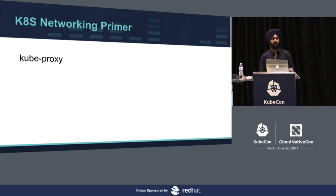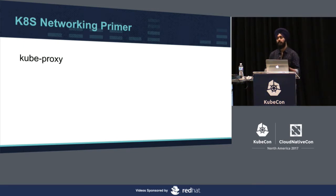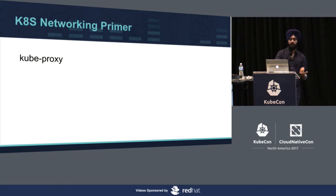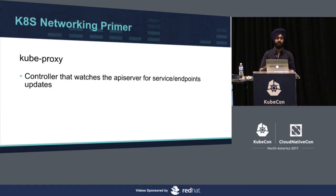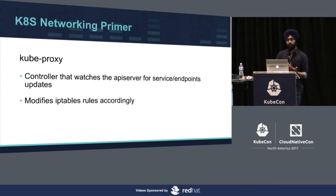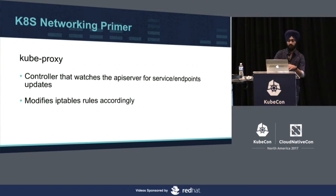The name kube-proxy is a bit misleading because it used to be a proxy around v1.0 days — a user space proxy that would constantly copy packets across kernel space and user space, which was very resource intensive. Then they switched and made it essentially a controller, like many other controllers, that watches the API server for service and endpoint updates and based on those updates modifies IP tables accordingly.